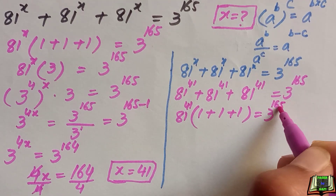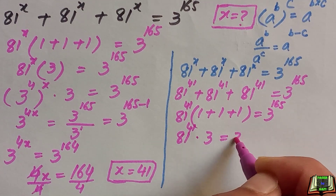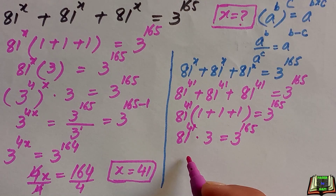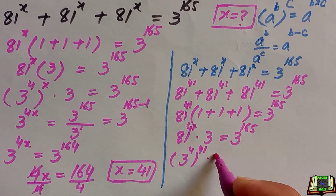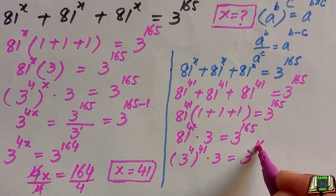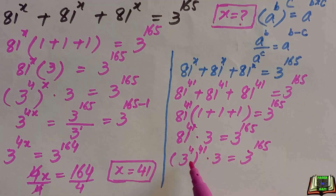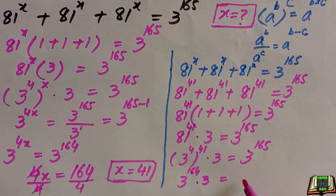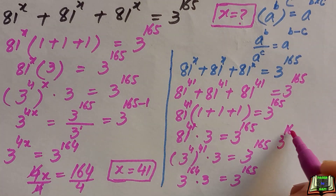We rewrite 81 as 3 raised to power 4, giving us 3 raised to power 4, raised to power 41, times 3, equals 3 raised to power 165. Applying the power of a power rule, this becomes 3 raised to power 164, times 3.